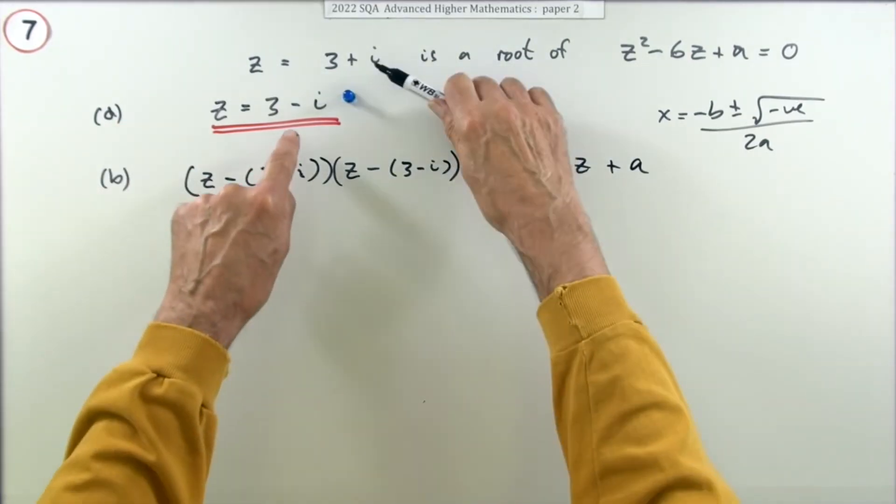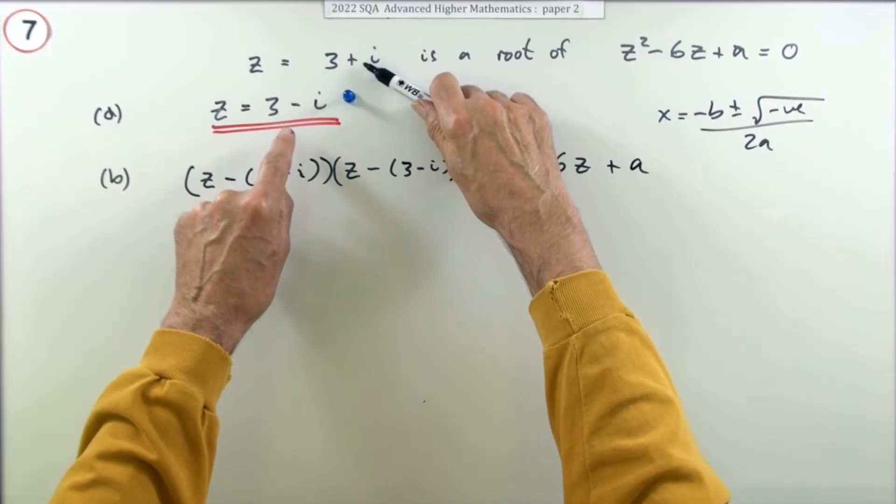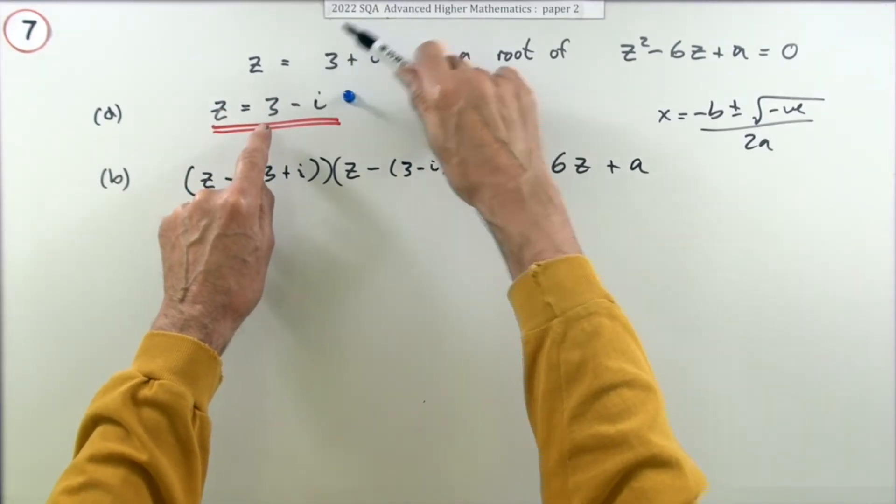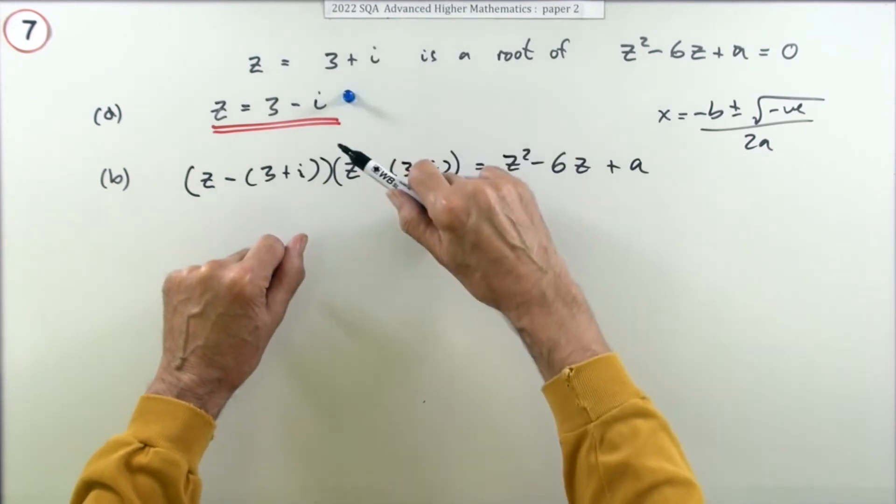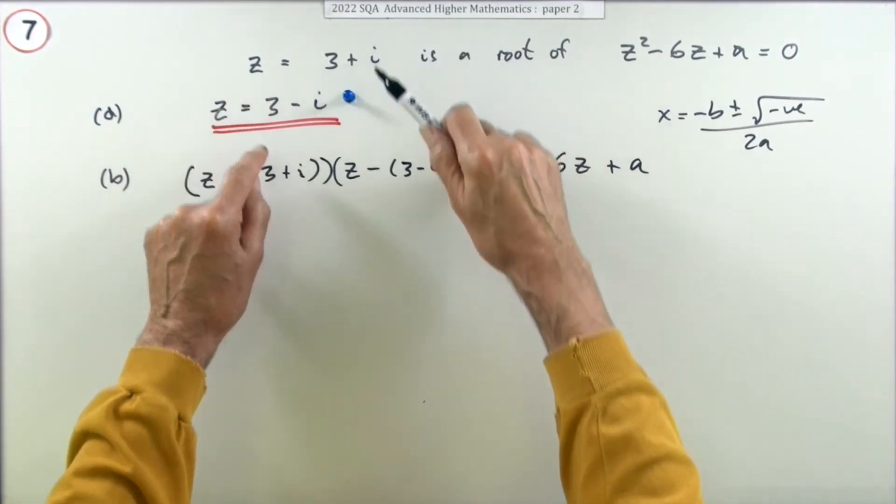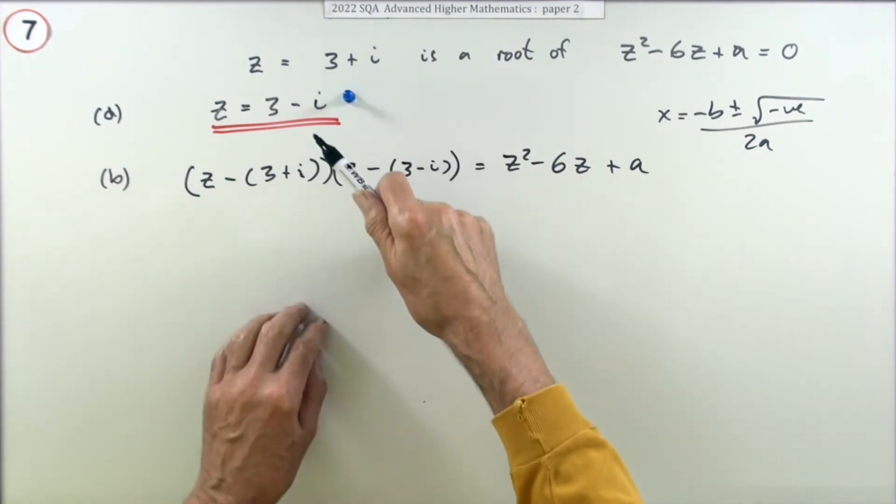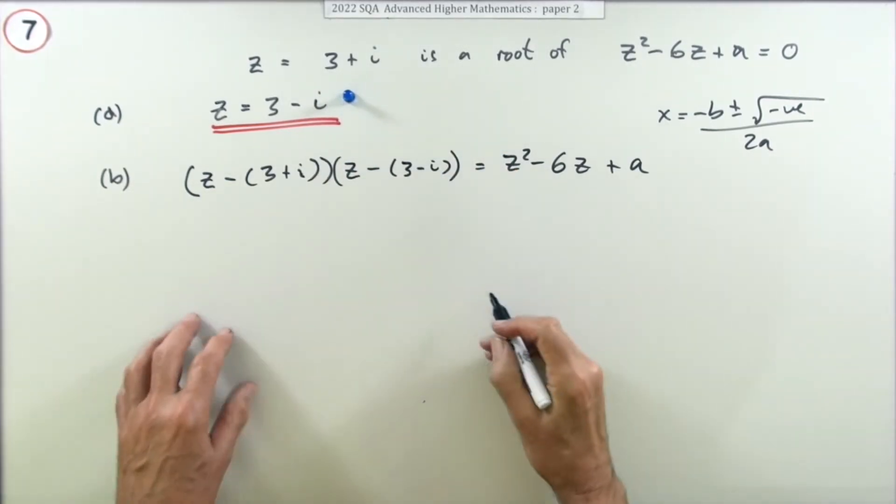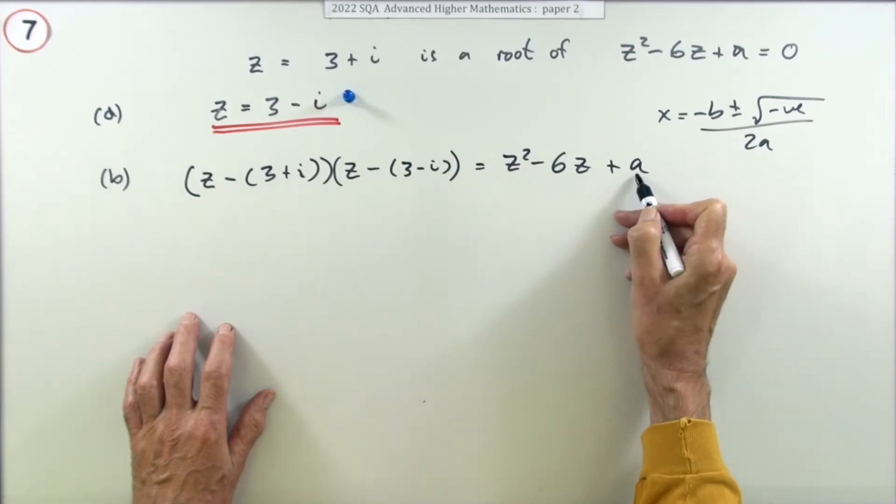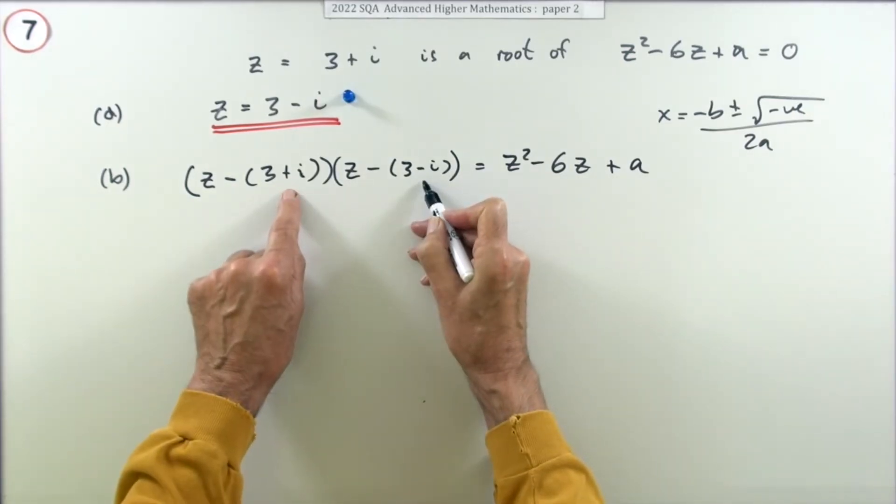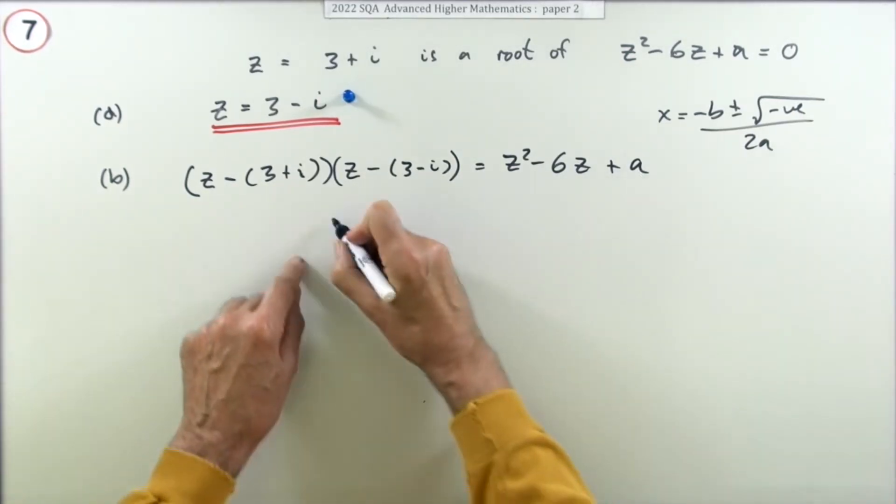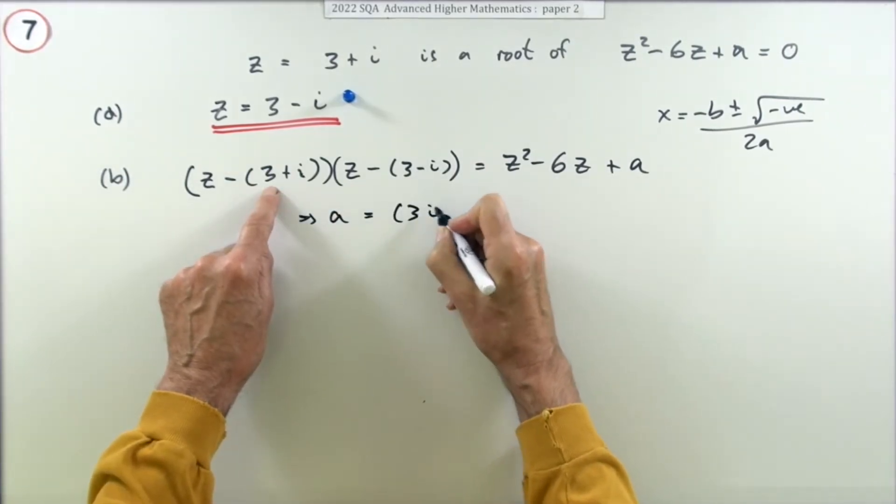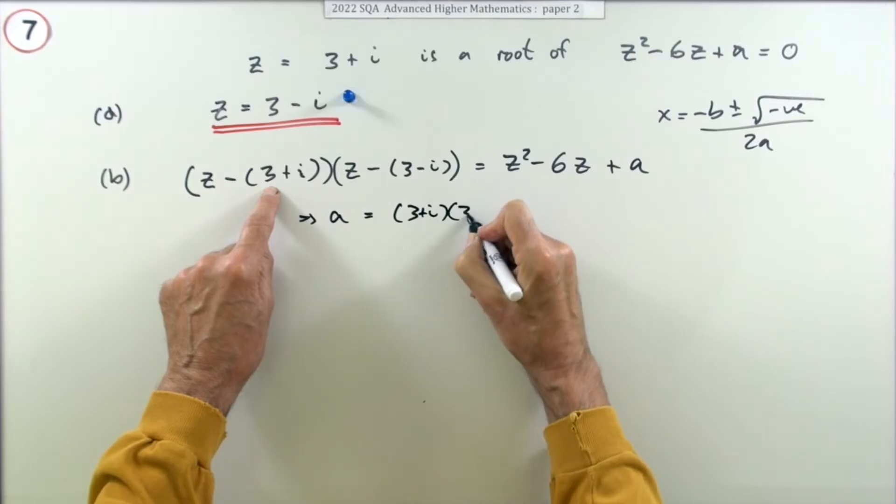Another thing of course about the complex conjugates is that if you add them the result's real because the imaginary parts cancel out, and if you multiply them the result is real because you end up with the sum of the squares. So for this one, to find that a, that a would be formed by multiplying the two constants together. In other words, a is going to be formed by multiplying 3 plus i times 3 minus i.